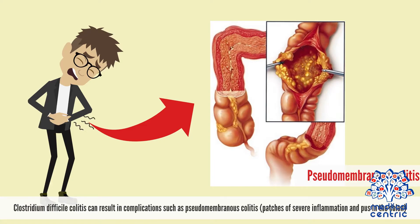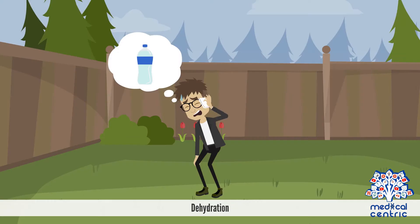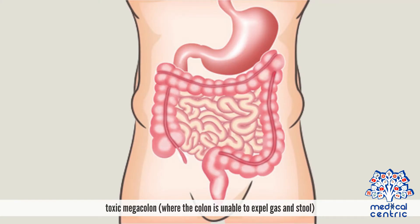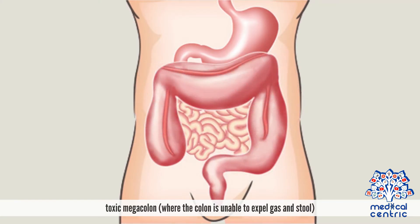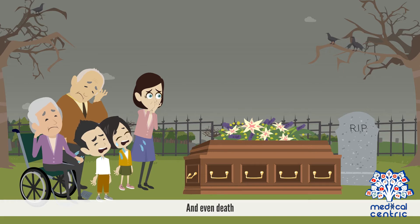Clostridium difficile colitis can result in complications such as pseudomembranous colitis, or patches of severe inflammation and pus in the colon, a hole in the colon, dehydration, toxic megacolon where the colon is unable to expel gas and stool, and even death.